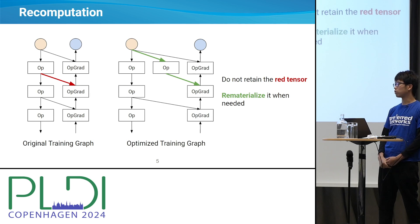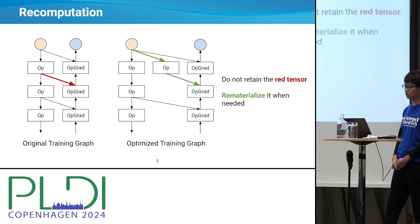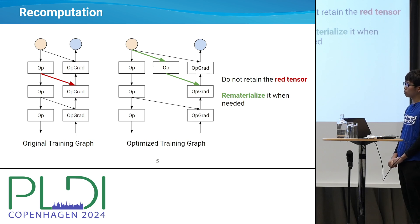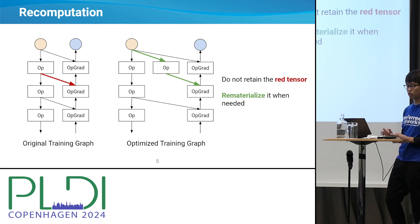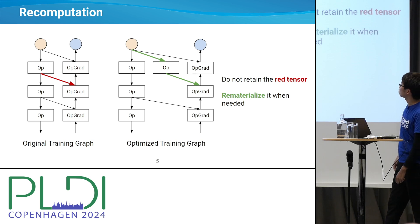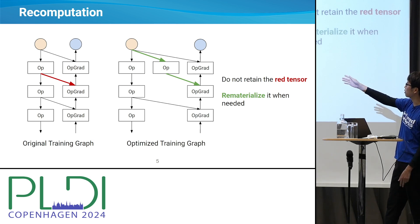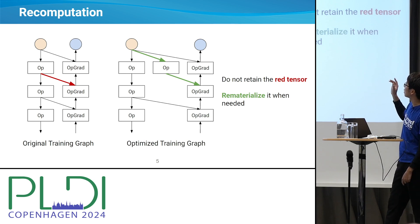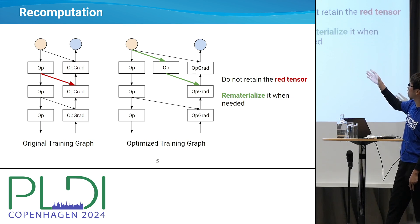One of the common ways to cope with this problem is called recomputation. In recomputation, instead of keeping large tensors in memory for a long time, we just discard them and recompute them from smaller inputs when needed. So in this example, instead of keeping the red tensors in the left figure, we rematerialize them as the green values during back propagation.